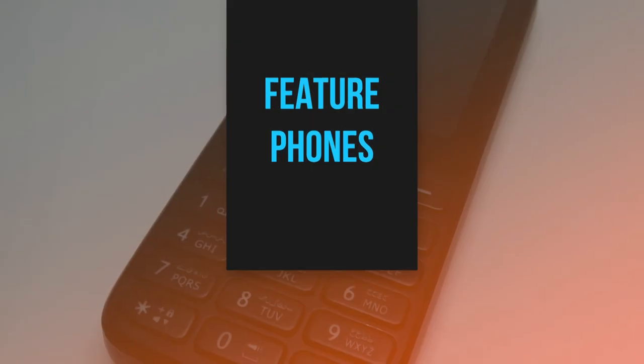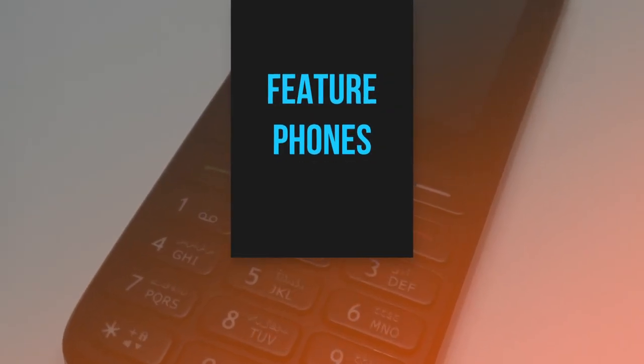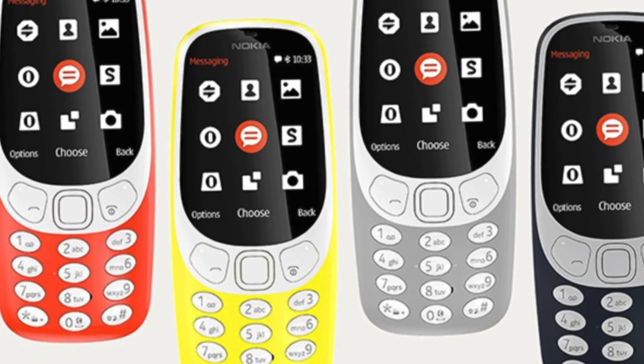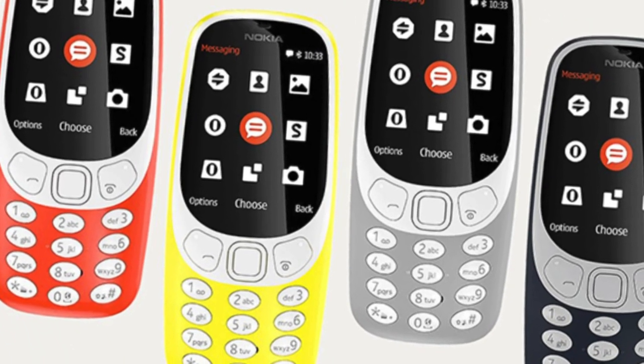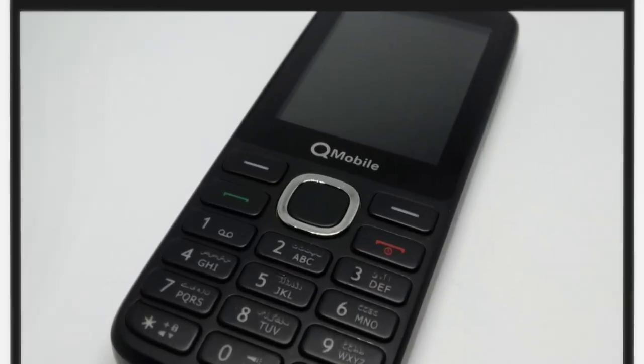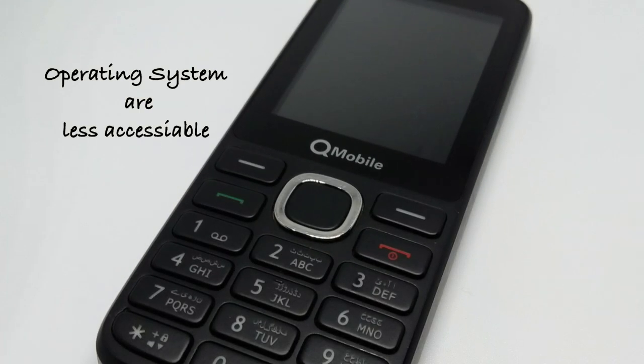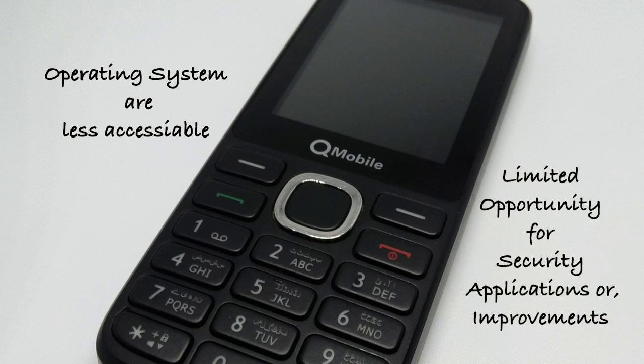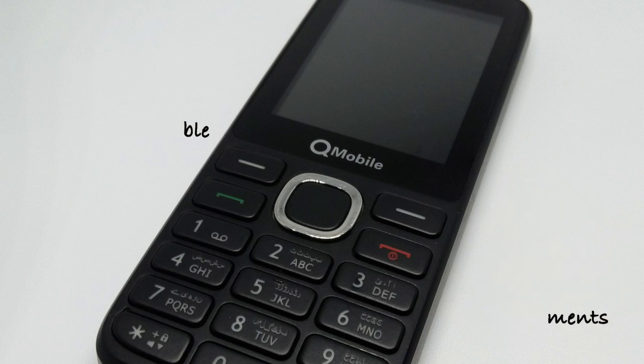Another category of mobiles are often called feature phones. Recently, feature phones have increased their functionalities to include those of some smartphones. But generally, feature phone operating systems are less accessible. Therefore, there are limited opportunities for security applications or improvements. We do not specifically address feature phones, although many measures discussed here make sense for feature phones too.